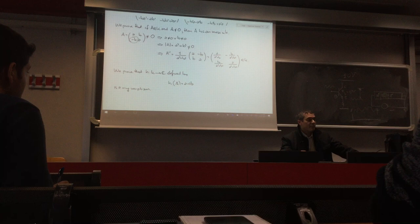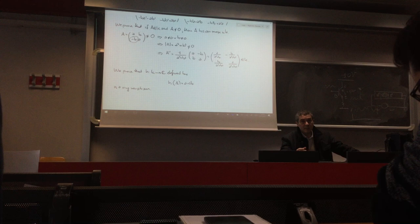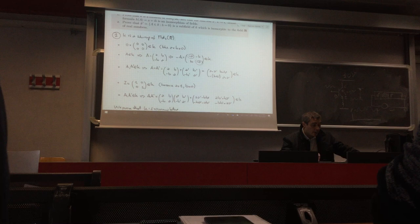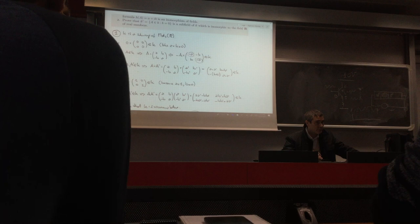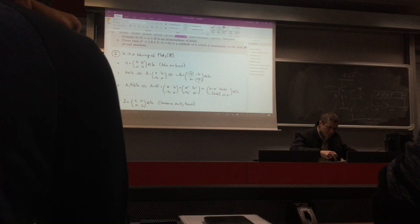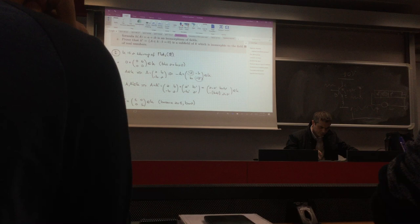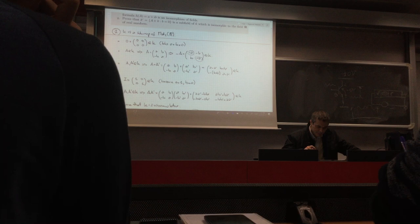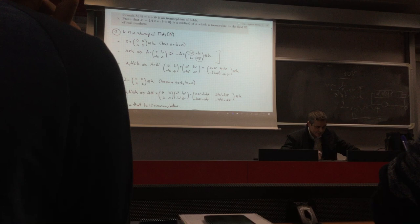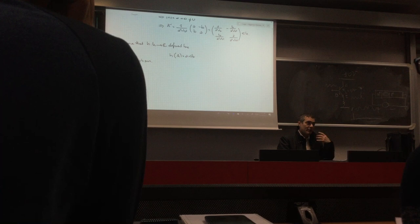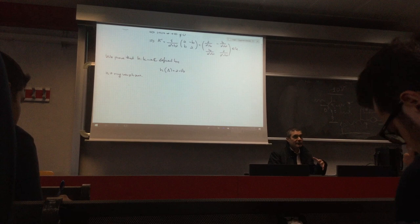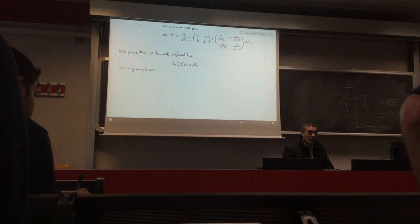To be a ring morphism, H should preserve all operations: zero, addition, opposite, and multiplication. For rings, since the additive structure is a group, it suffices to check that H preserves addition. We compute H(A + A'). Since we already computed A + A' as (A+A', B+B'; -(B+B'), A+A'), taking H gives the complex number (A+A') + i(B+B').